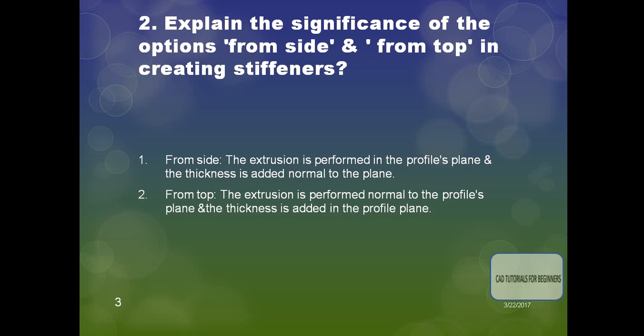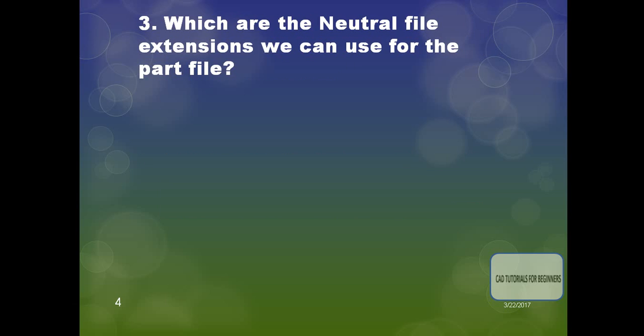The second type is 'From Top', where the extrusion is performed normal to the profile's plane and the thickness is added in the profile plane. So the thickness is added within the profile plane for the 'From Top' stiffener.